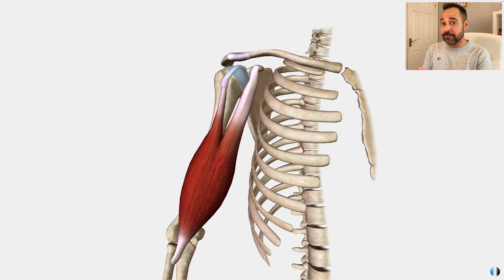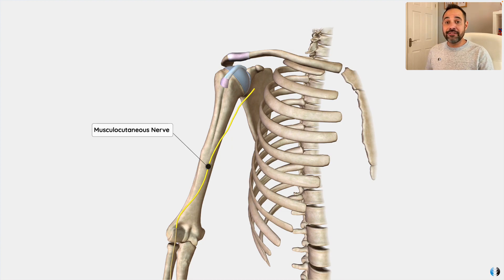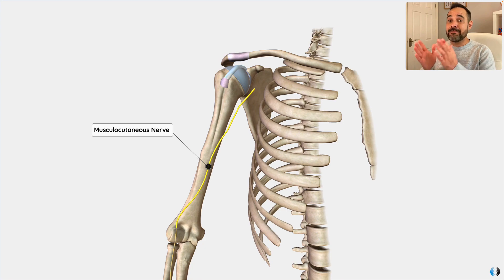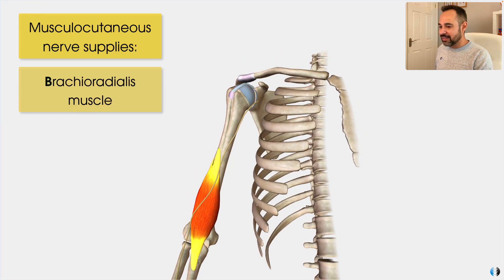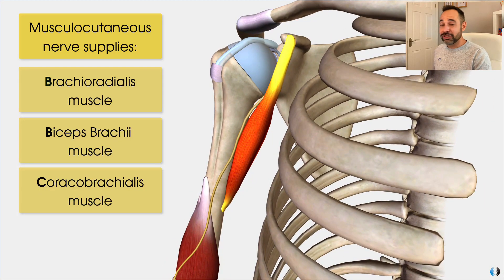The biceps brachii muscle as a whole is innervated by the musculocutaneous nerve, which is a terminal branch from the brachial plexus. To remember the key muscles innervated by this nerve, just remember BBC: the first B is the brachialis muscle, the second B is obviously the biceps brachii muscle, and the C is the coracobrachialis. BBC - a nice little way of remembering it.